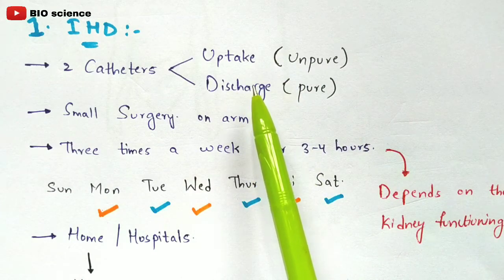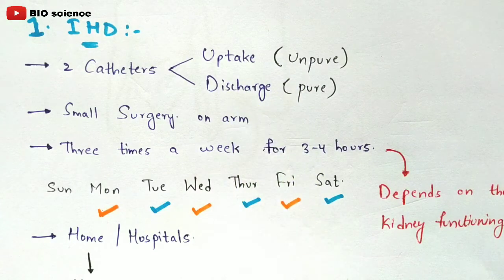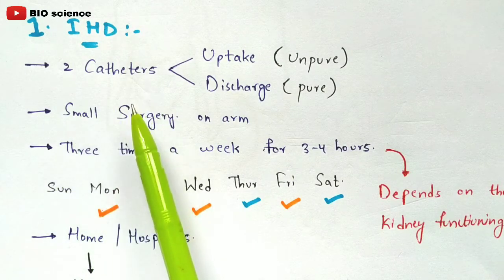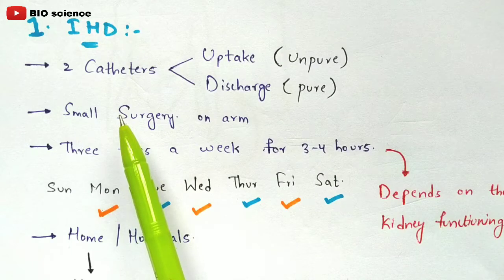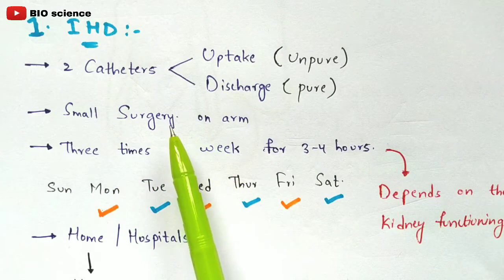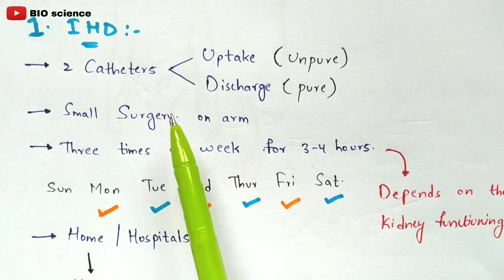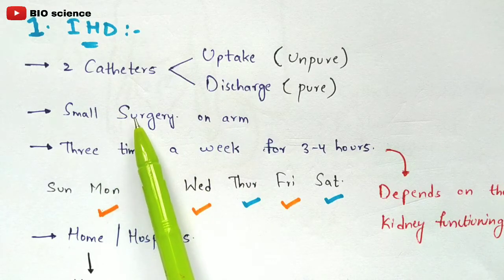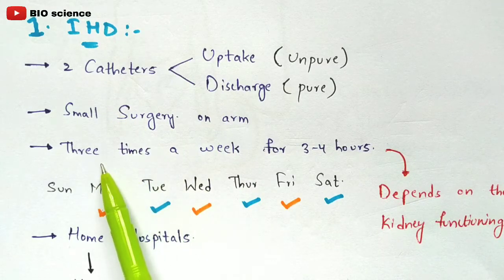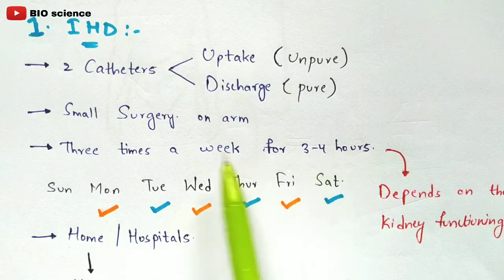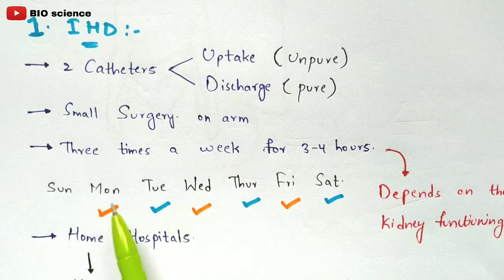An important point to remember: uptake of blood is from the arteries, and discharge of purified blood is into the veins. In the IHD process, a small surgery is required on the arm to locate the arteries so the needle can be inserted to extract blood.